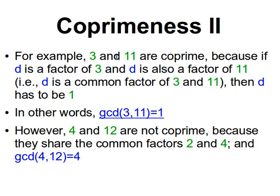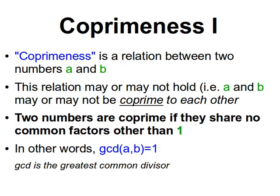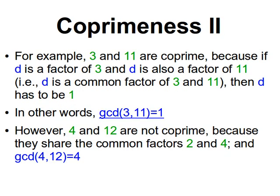For example, three and eleven are co-prime. The reason is that if d is a factor of three and d is also a factor of eleven, then d has to be one. The only common factor that three and eleven share is one, so d equals one. In other words, the GCD of three and eleven is one. Also note that a and b don't necessarily have to both be prime numbers — they can still be co-prime to each other.